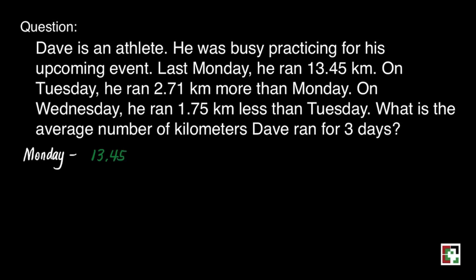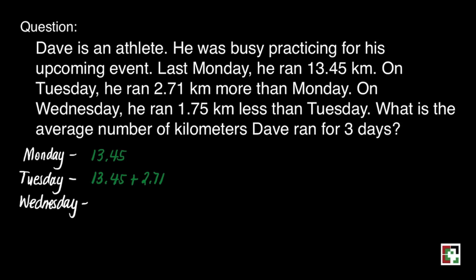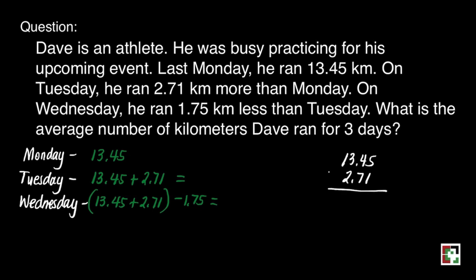For Monday, he ran 13 and 45 hundredths. For Tuesday, take note, it is 2 and 71 hundredths kilometers more than Monday. For Wednesday, all we need to do is copy Tuesday's given, then subtract 1 and 75 hundredths kilometers. We'll start with Tuesday: add 13 and 45 hundredths and 2 and 71 hundredths, and that is 16 and 16 hundredths kilometers.